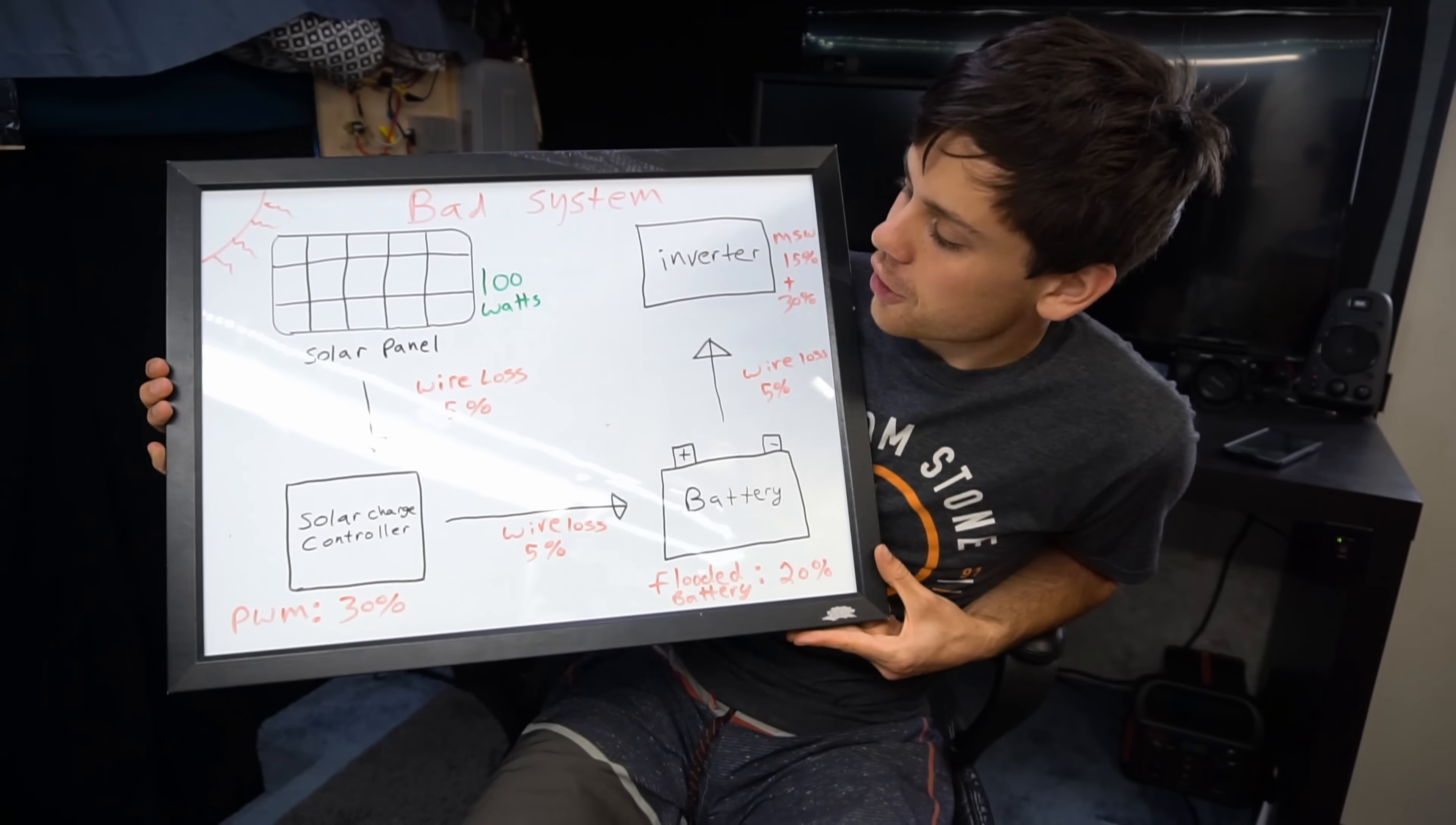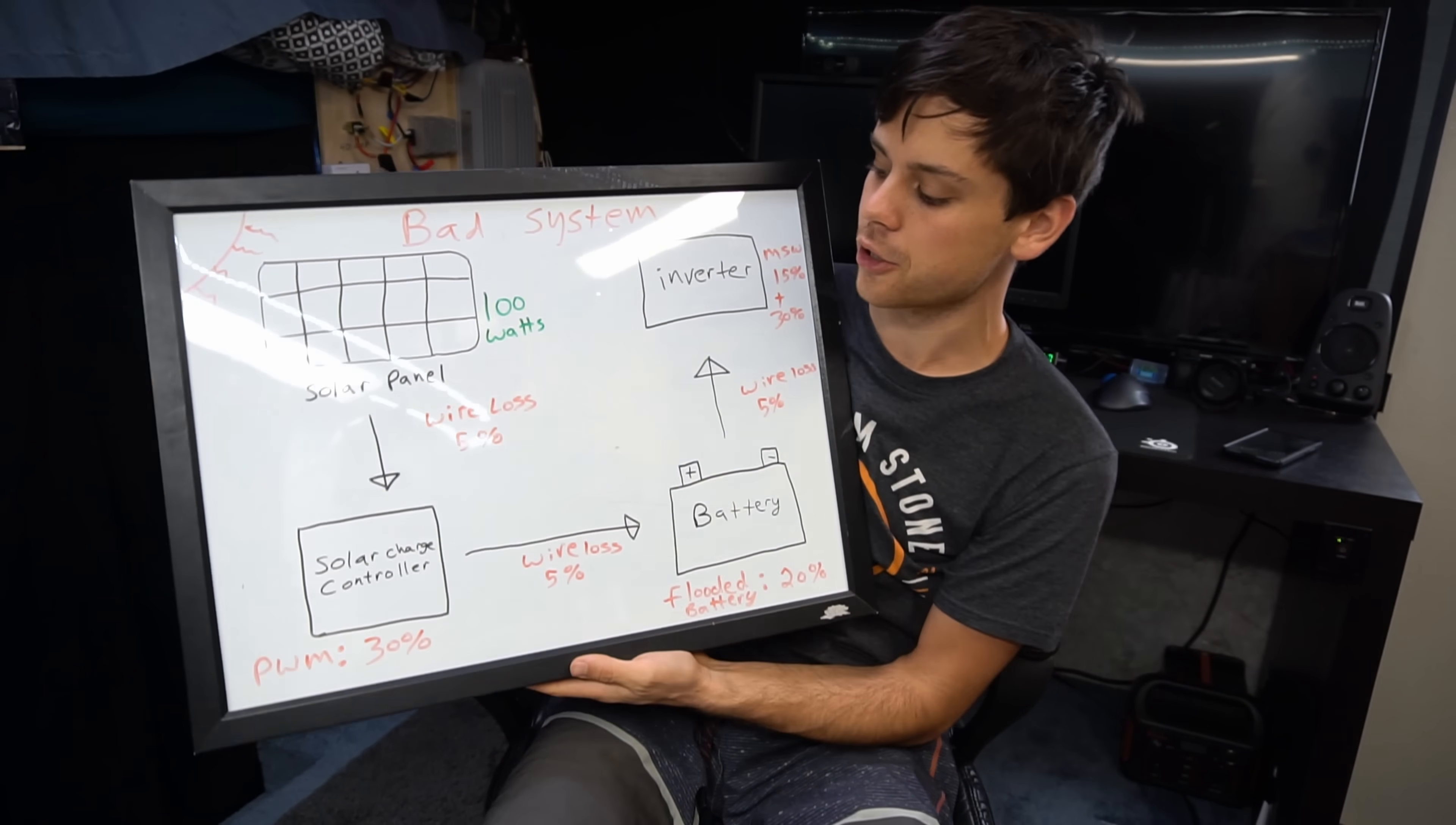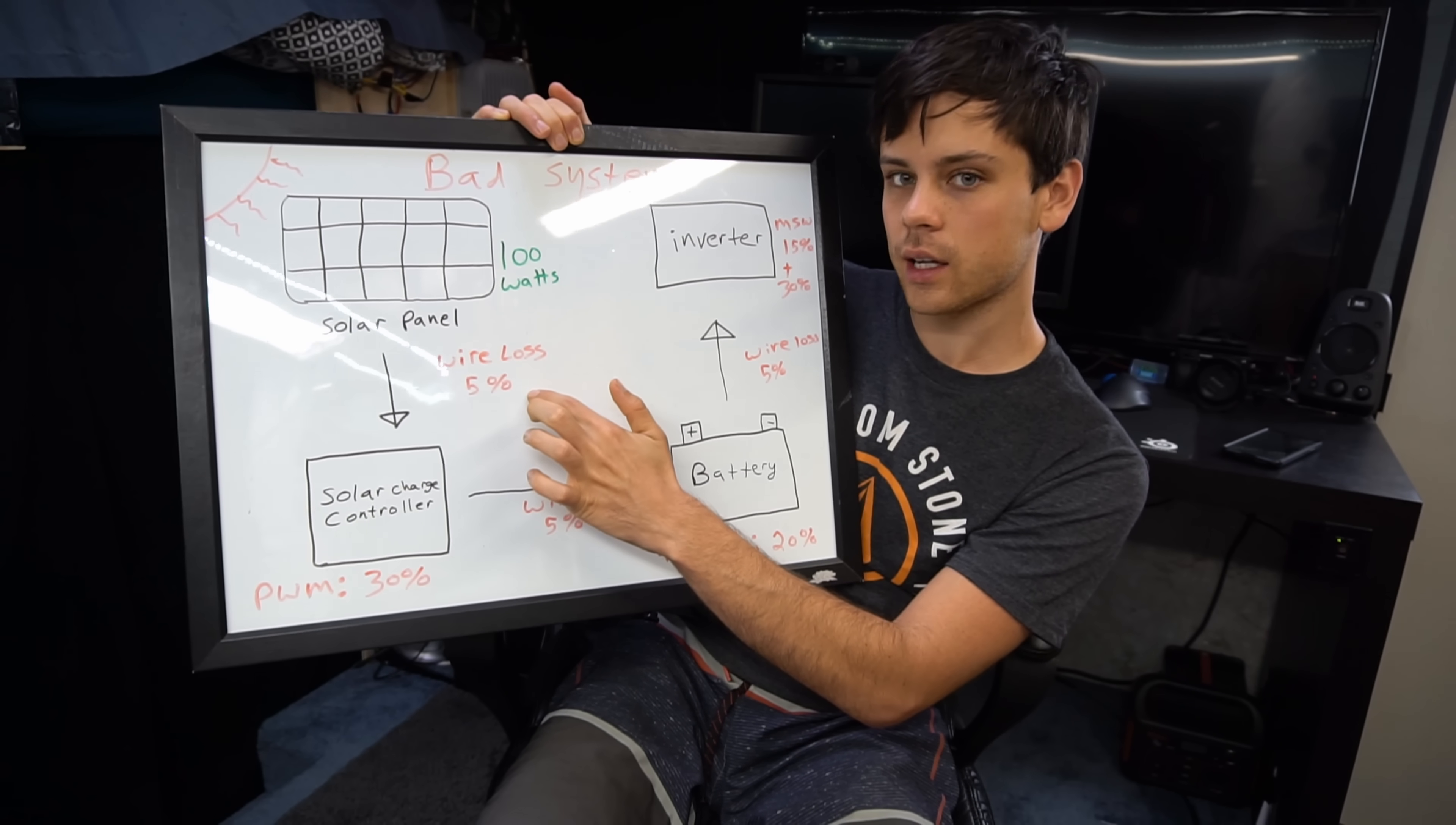So now this is our first example system and before we calculate I'm going to go over all of these losses. First we have 100 watts in green that the solar panel is producing and then we're going to have three wire loss situations. These are DC wires and they are low voltage and a lot of people do not gauge them properly.